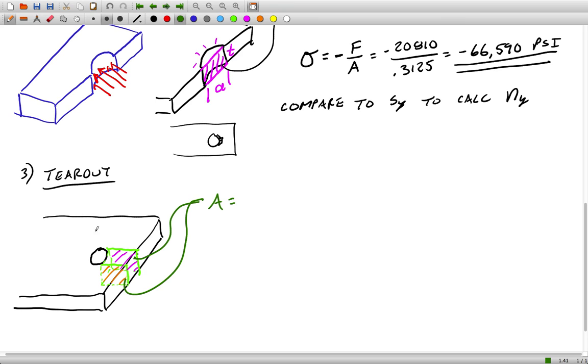That basic rectangle would have this length, which was given as 0.75 in the problem statement, the thickness once again 0.625, and there are two of those surfaces, one each side, so we'll have a 2 out front.